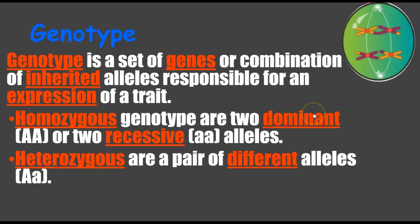Genotype is a set of genes, or instructions — the combination of inherited alleles responsible for the expression of a trait. This is what leads to the phenotype, the physical traits. You have to have these specific genes first inherited.